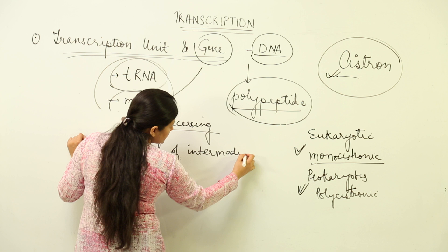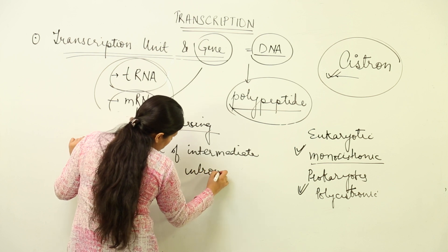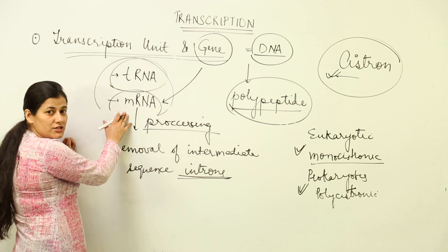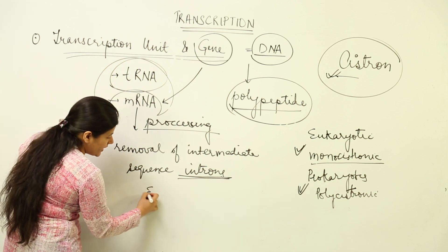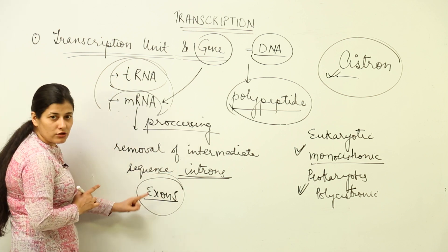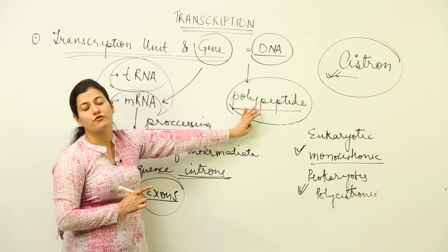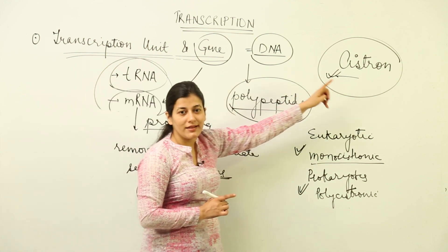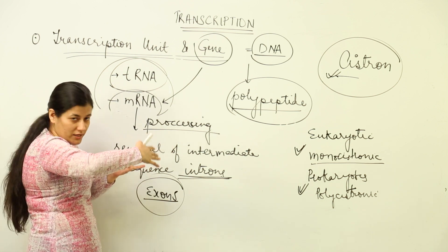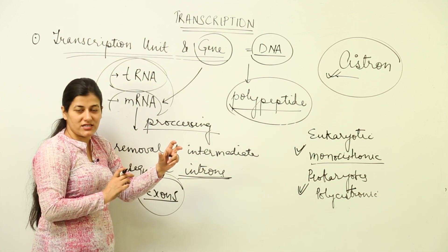Those intermediate sequences are known as introns. Introns are those useless sequences present on mRNA which are removed. What is left are exons. Exons are the coding sequences on the RNA that are ultimately responsible for formation of the polypeptide. Within a cistron there are introns and exons; introns are the sequences between exons — that's why they are called introns.